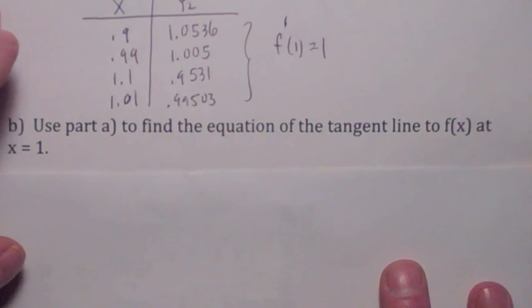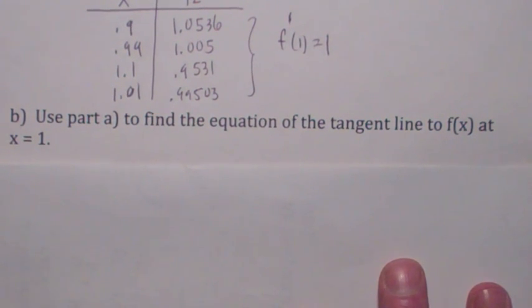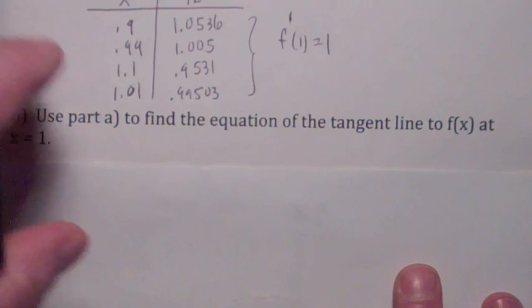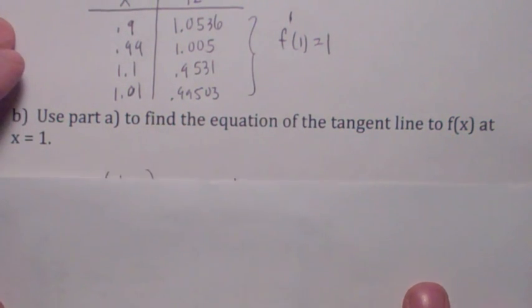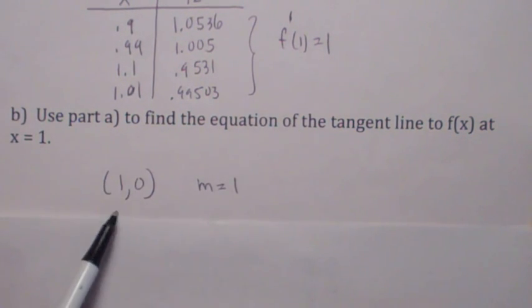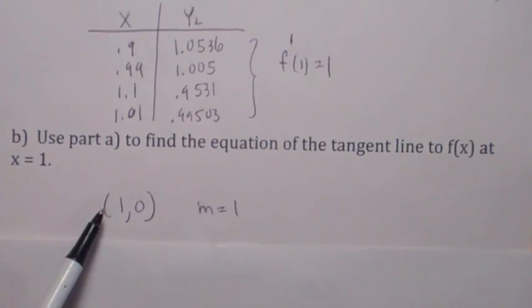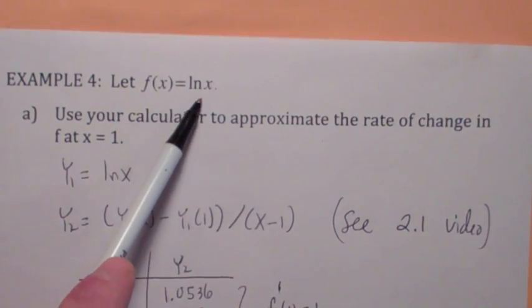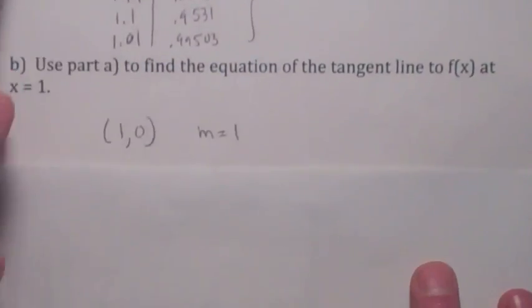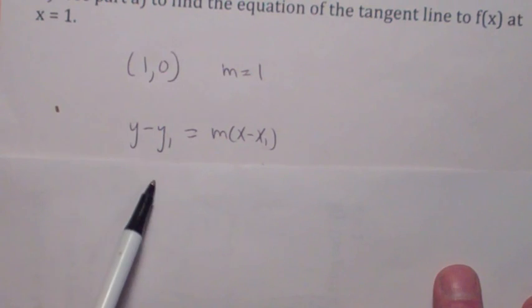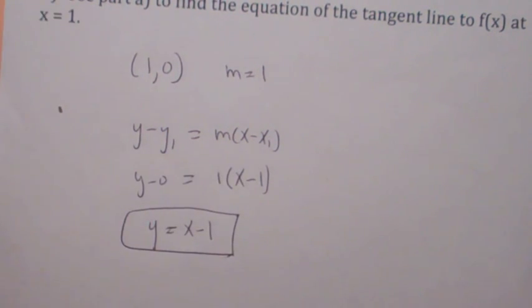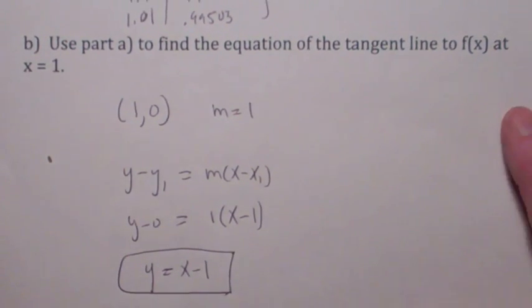So the last question is, what would be the tangent line? What would be the equation of the tangent line at x equal 1? Now that you've approximated f prime of 1, well, the slope is 1. The point is the point 1, 0, right? When x equals 1, log of 1 is 0, right? So you could use the point slope formula and you plug those in, you get y equals x minus 1.